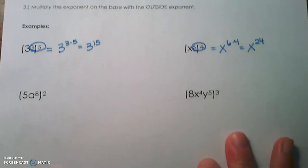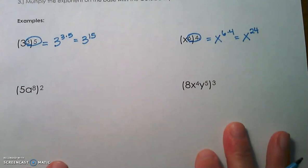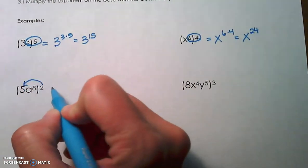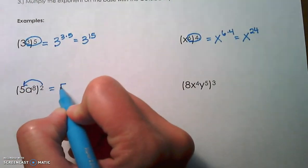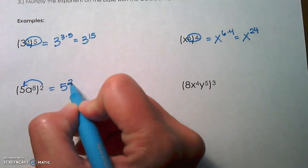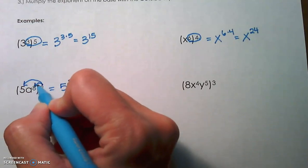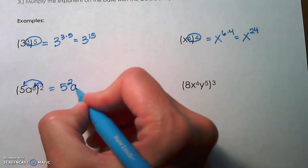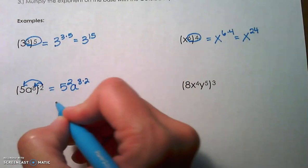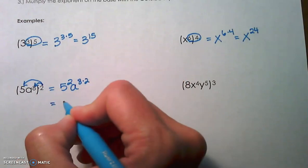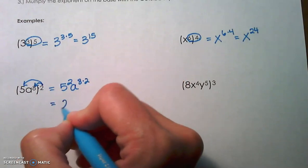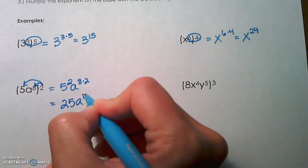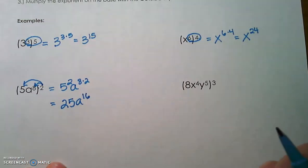Now we have a product in the next example. The 2 has to go to the 5 as an exponent, giving us 5 squared. Then the 2 and the 8 get multiplied, giving us a to the 8 times 2. So we end up with 5 squared, which is 25, and a to the 16th.